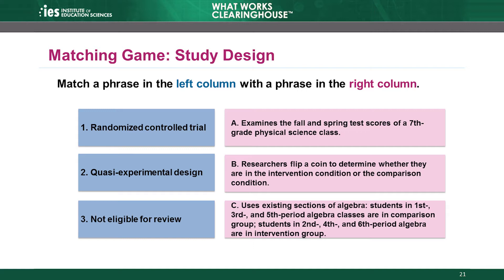Please feel free to pause the video at this point so that you can read through the answer choices first. The answer is B. Researchers flip a coin to determine whether they are in the intervention condition or the comparison condition. This answer is correct because it describes a completely random process — the coin has two sides, there are two groups, and participants can go into either one.